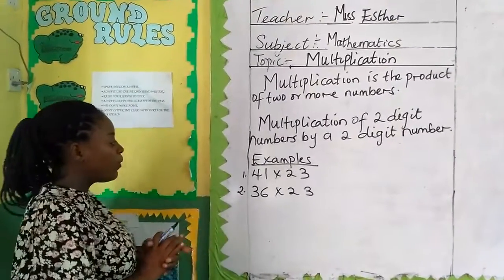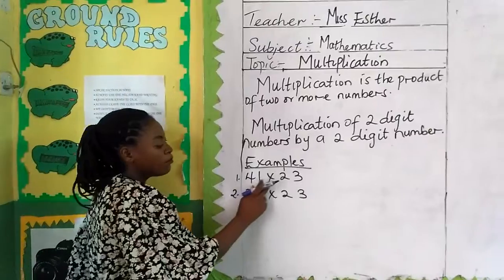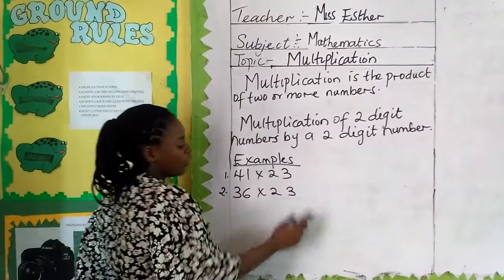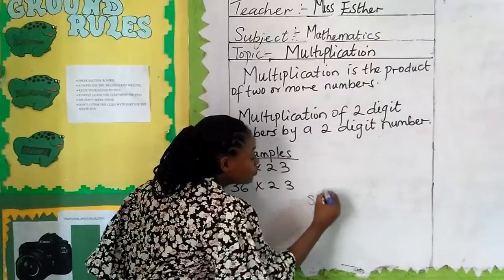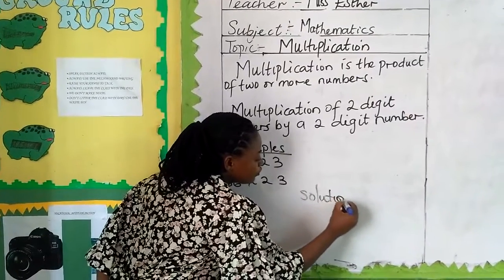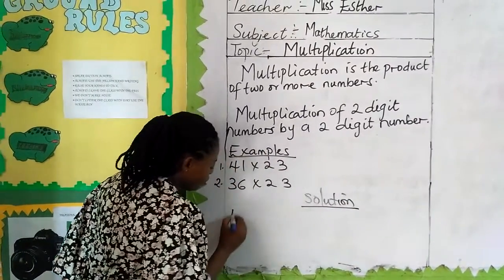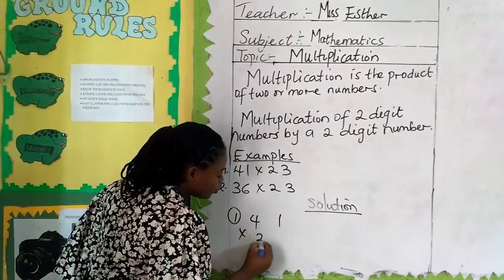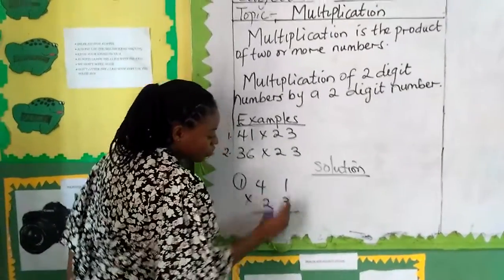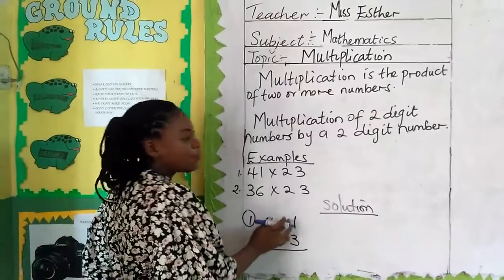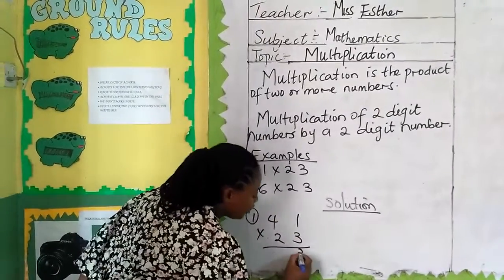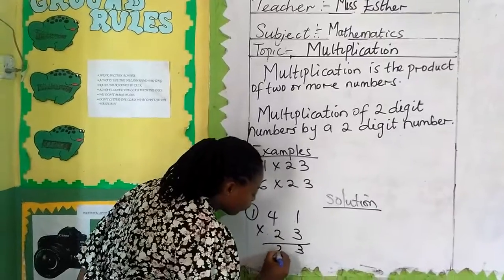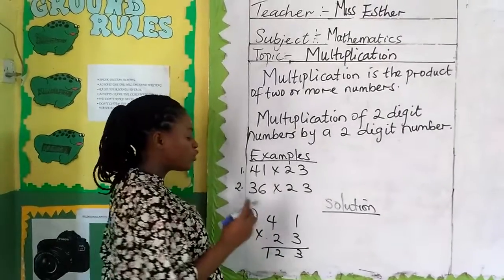Examples are here on the board. We have 41 multiplied by 23, and 36 multiplied by 23. In this solution, 41 multiplied by 23: 3 multiplied by 1 gives us 3. 3 multiplied by 4 gives us 12. We are writing 12 because we are treating two digits.